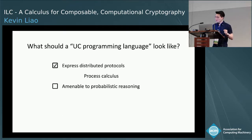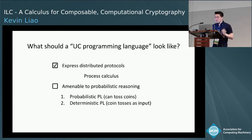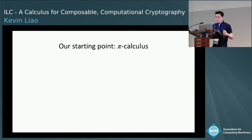To satisfy our second requirement, we can take one of two paths: either design a probabilistic programming language where processes toss their own random coins, or design a deterministic language and think of the coin tosses as input. We choose the second route. So together, what we're looking for is a deterministic process calculus.